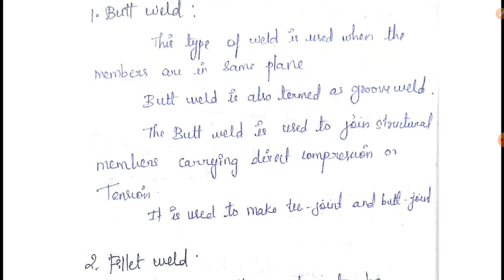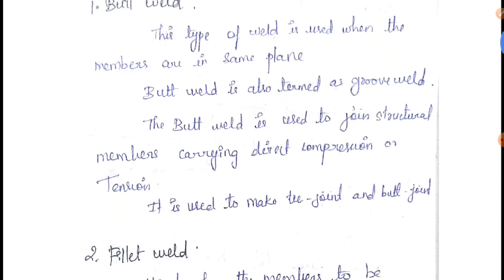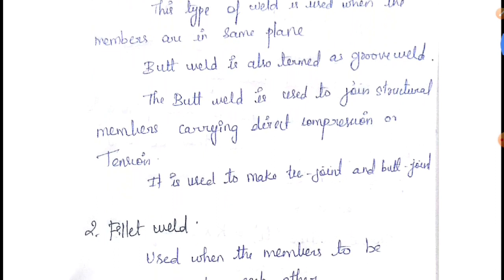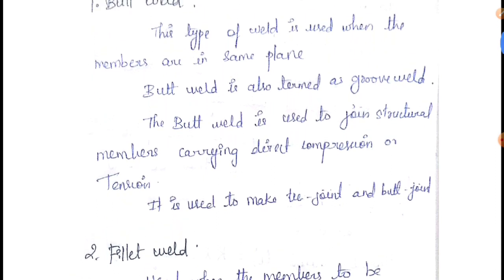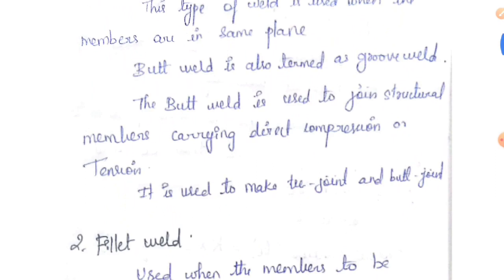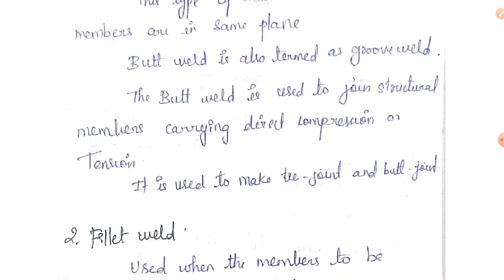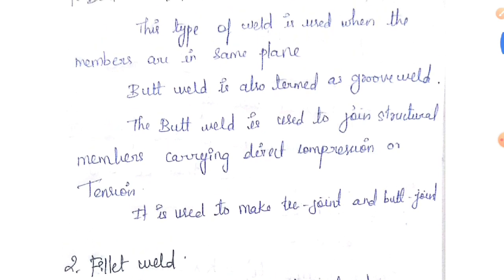Butt weld is also termed as groove weld. So the name of the butt weld is also groove weld. Butt weld is used to join structural members carrying direct compression and tension — this is the important point. It is used to make T-joint and butt joint.